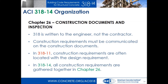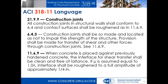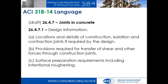Here's a language example. In 318-11, provision 6.4.3 reads: 'construction joint shall be so located not to impair the strength of the structure.' That's direction to the engineer, but a contractor reading it might ask, am I liable? Who is this talking to? That language goes all the way back to 1910. In 318-14, all that language has been reorganized as direction to a licensed design professional — it now reads more clearly as direction for what goes into the contract documents.